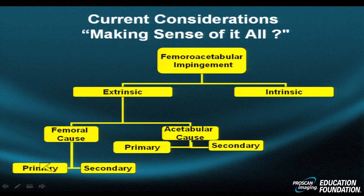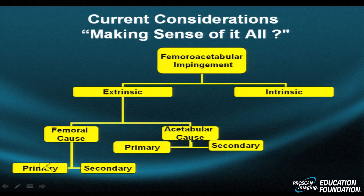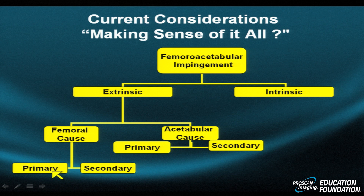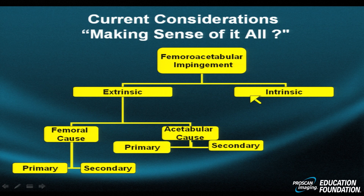Another way to divide up FAI — femoral acetabular impingement — is by extrinsic versus intrinsic etiologies. Extrinsic causes can be divided into femoral and acetabular causes, further subdivided into primary and secondary — in other words developmental, long-standing, or acquired. The same subdivisions apply on the acetabular side.